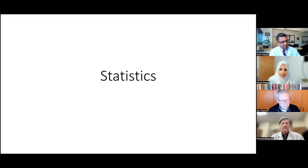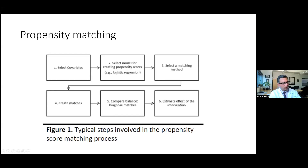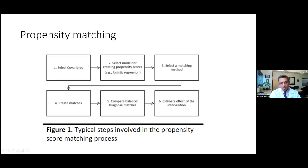I'll just describe it and share my screen with you for a couple of slides. The idea is that in propensity matching, it's fairly straightforward: we take the covariates, we select them, and we create propensity scores. The propensity score is the probability of an individual patient to get the treatment.